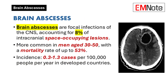Brain abscesses are focal infections of the central nervous system, representing approximately 8% of all intracranial space-occupying lesions. They are more commonly observed in men between the ages of 30 and 50 and can have a mortality rate as high as 53%. The incidence of brain abscesses in the United States ranges from 0.3 to 1.3 cases per 100,000 person-years.